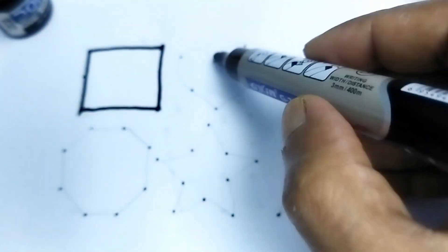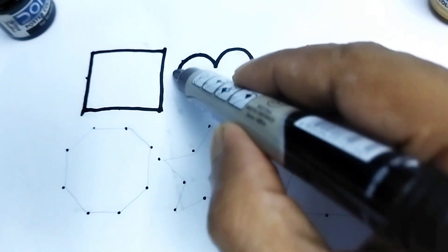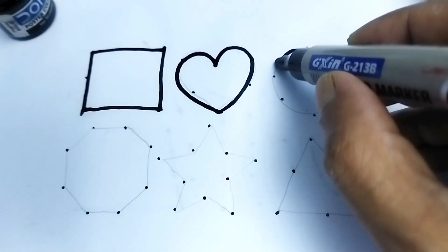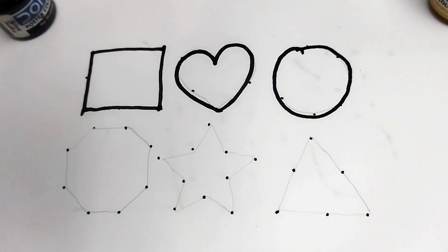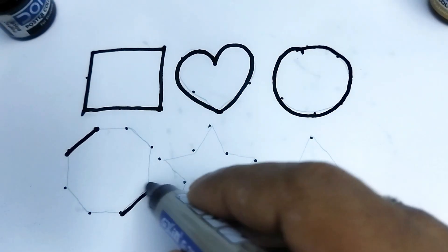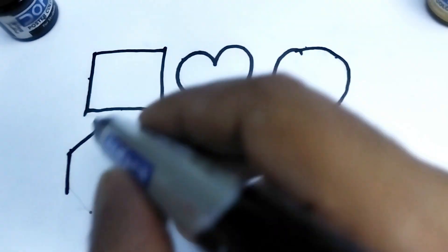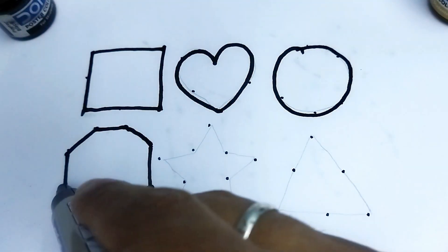Square. Heart shape, this is heart shape. Circle, circle. One, two, three, four, five, six, seven, eight.